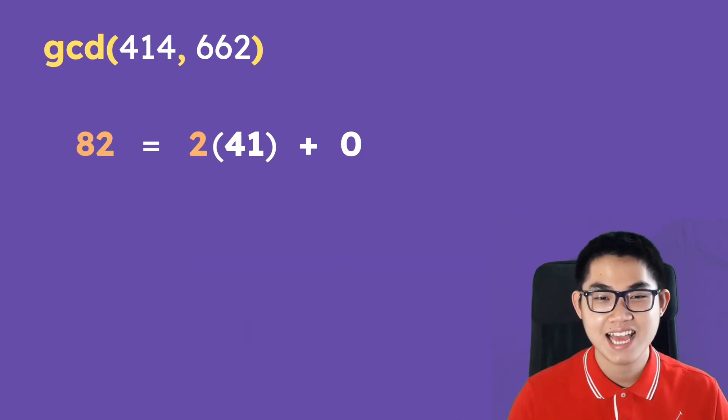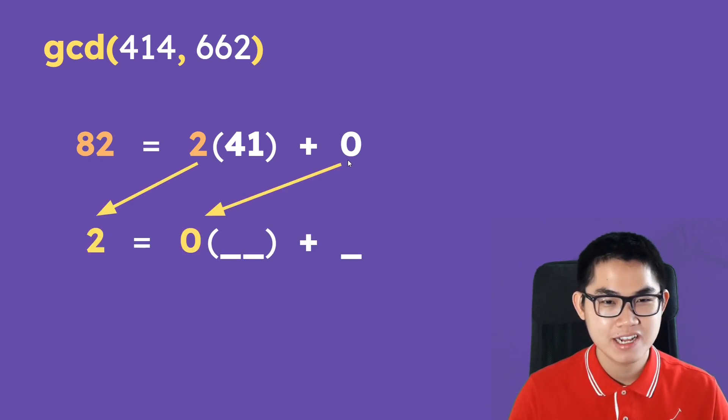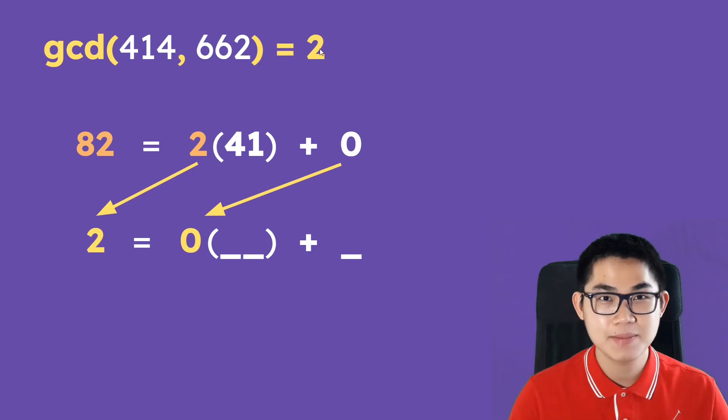At this point you can stop here, but there are some teachers who want you to write one extra line. Take the number 2, put it down here, take the number 0 and put it down here. And I'll explain why in a second. But when you do this, then these will be blank. You don't need to fill in these numbers.